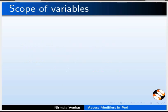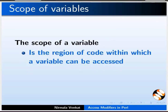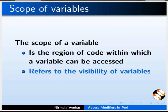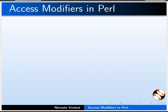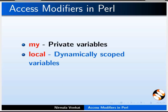Let us start with the introduction to the scope of variables. The scope of a variable is the region of code within which a variable can be accessed — in other words, it refers to the visibility of variables. We will discuss My, Local, and Our modifiers in Perl. My means private variables, Local means dynamically scoped variables, and Our means global variables.